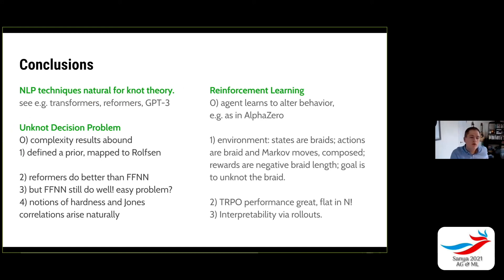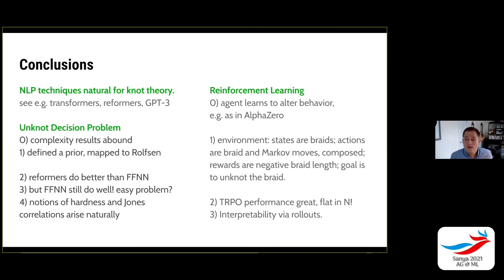What we found is that reformers do better than feed-forward neural networks, but the feed-forward neural networks still do surprisingly well, suggesting this problem is easier than people might anticipate. We also saw that notions of hardness of knots emerged naturally — something suggested by ML that we'd like to understand more systematically. In reinforcement learning, the states are braids, the actions are braid and Markov moves, the rewards are the negative braid length, and the goal is to unknot the braid. Trust region policy optimization performs wonderfully — performance is relatively flat in N, doing equally well on 100-crossing knots as 10-crossing knots. We also showed that you can interpret structure by studying rollouts of trained agents.